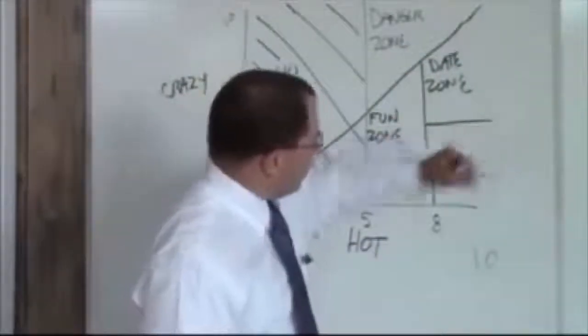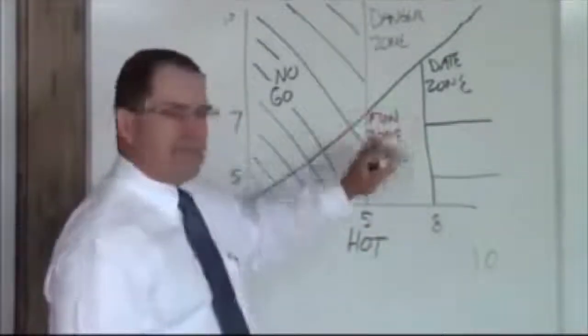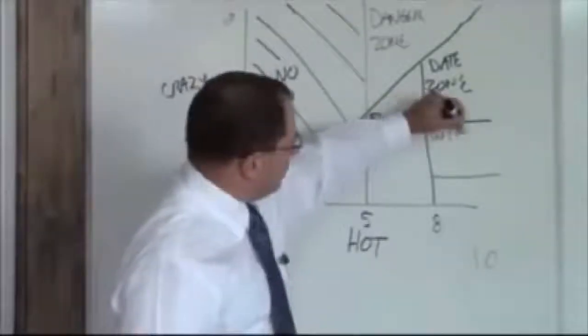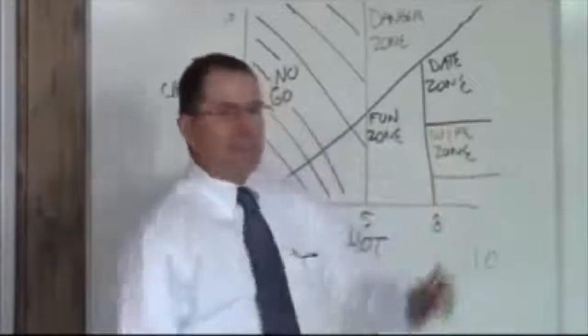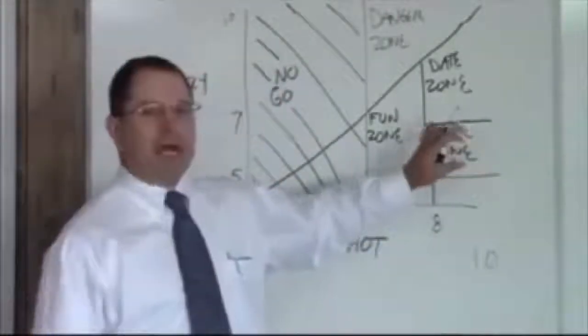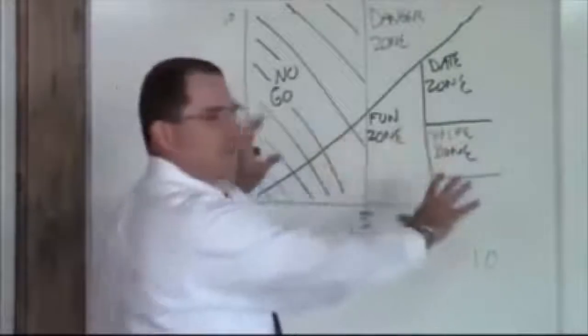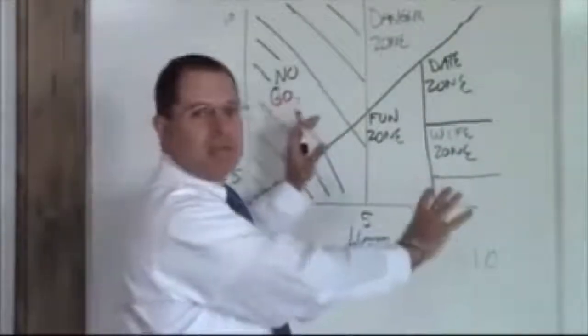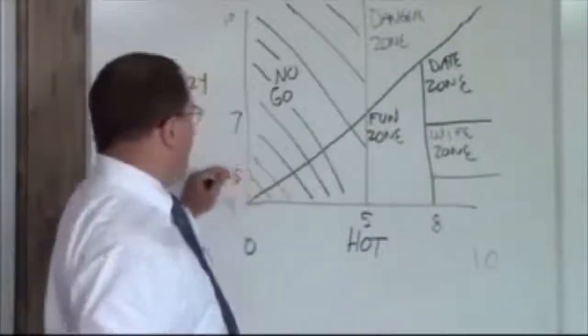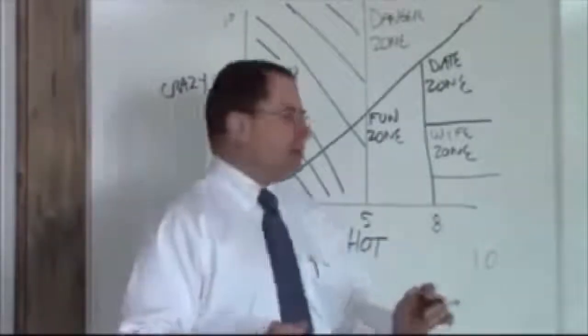Above an eight hot and between about a seven and a five crazy, this is your wife zone. When you meet this girl, you should consider a long-term relationship. This zone is not scaled to size. This is a representation and not an actual pie chart showing you how many of these people are out there. This is simply a representation of what you're after. You want to be five to seven crazy above an eight hot. That's your wife zone.